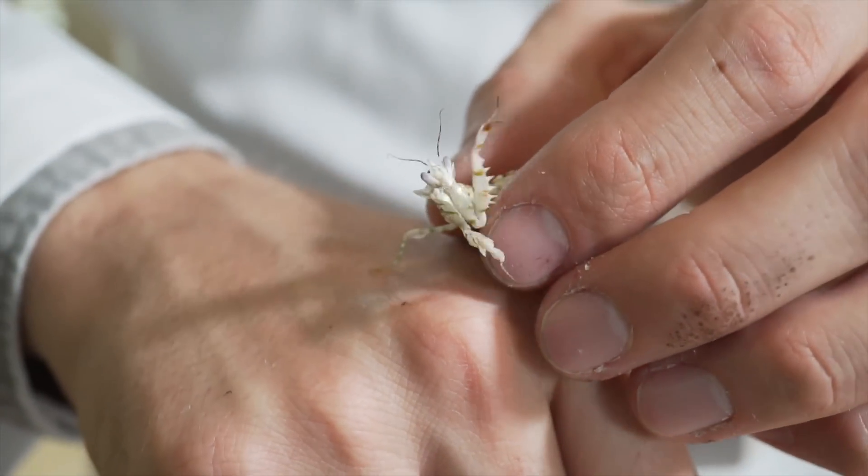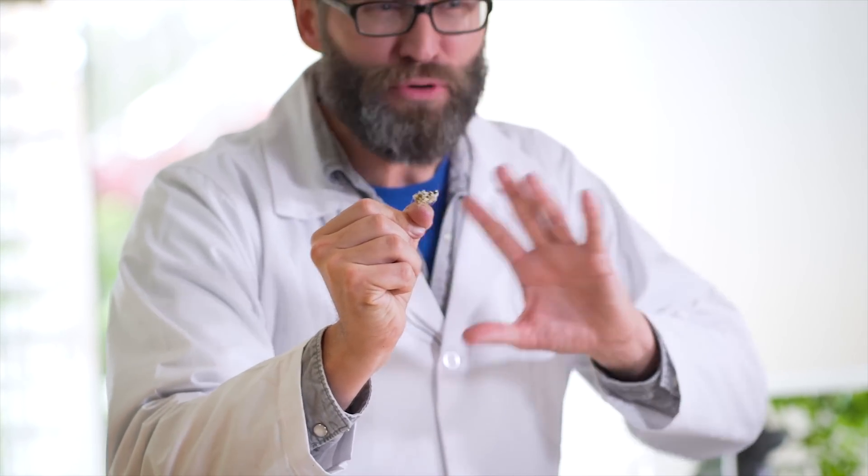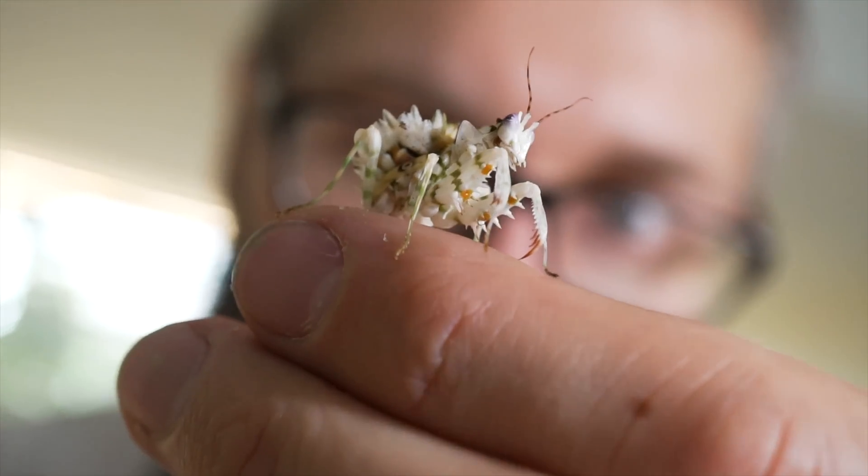And when an insect comes up there to visit that flower, maybe to get a nice sip of nectar, they reach out and grab it and bite down on it. So praying mantises are opportunistic predators. They will catch pretty much anything that they're able to kill that doesn't kill them.